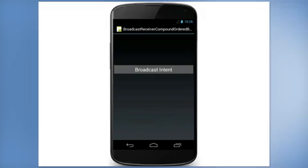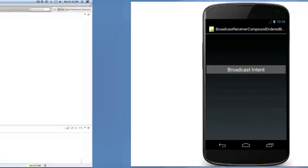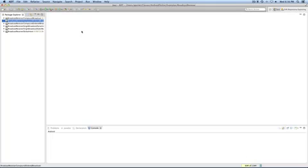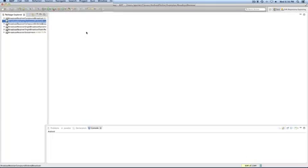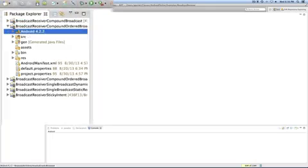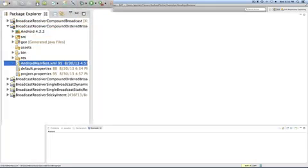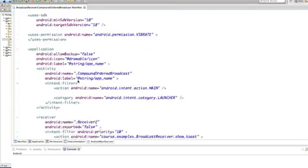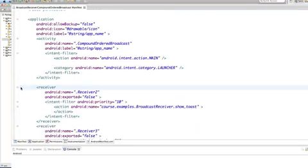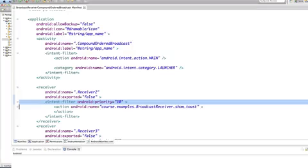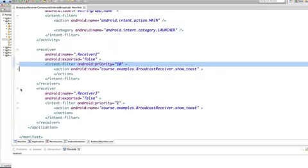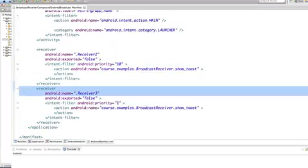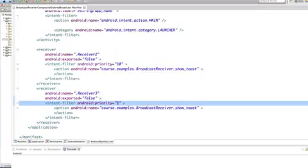Let's look at the source code for this application. Now here, I've got the application open in the IDE, and I'll start by opening up the AndroidManifest.xml file. As you can see, I've statically registered Receiver 2 with a priority of 10, and Receiver 3 I've registered with a priority of 1.